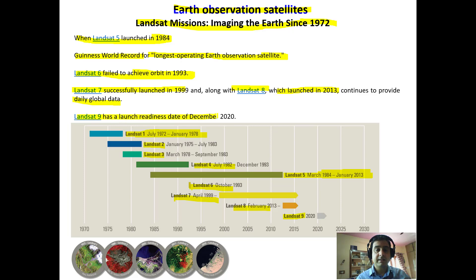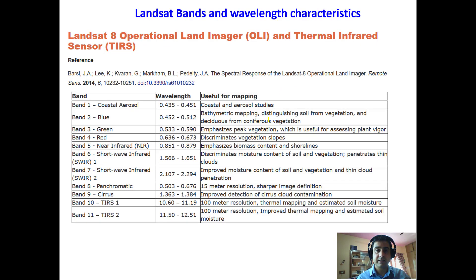Landsat-9 was the recent addition to the series. Landsat-8 has an Operational Land Imager and Thermal Infrared Sensor with 11 bands — band 1 through 11 — corresponding to different wavelengths: blue, green, red, near-infrared, shortwave infrared, and panchromatic (black and white), as well as bands for cloud contamination detection.